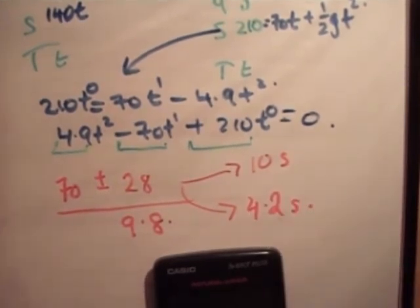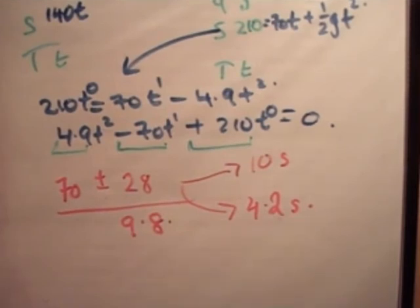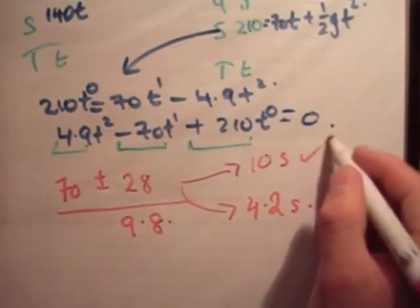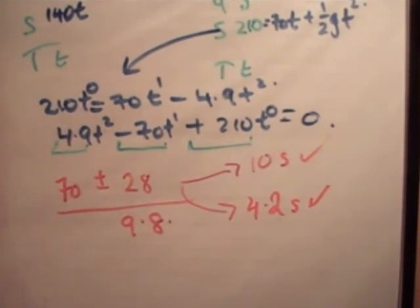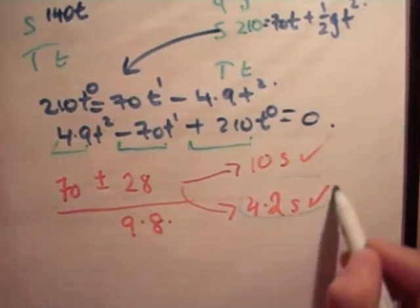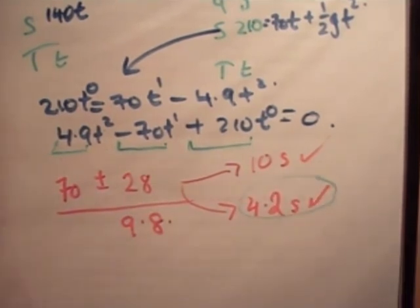Now, are those correct? 10 and 30 over 7, what's that now? 4.2. So both of those are correct. So the bullet first strikes the plane at 30 over 7, which is 4.2 seconds. Alright, so that was pretty straightforward. Thanks for watching. Pass it on to your friends, and please subscribe to my channel.